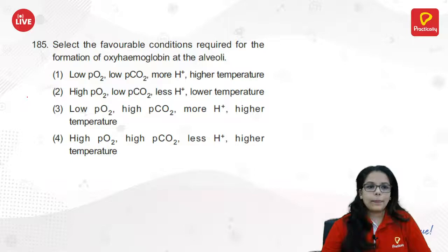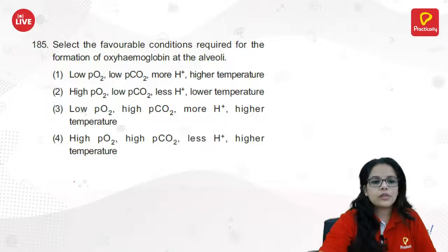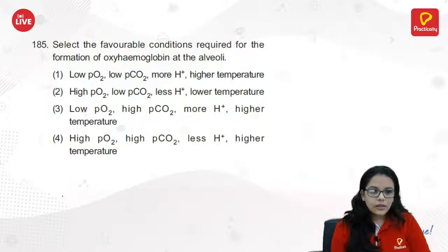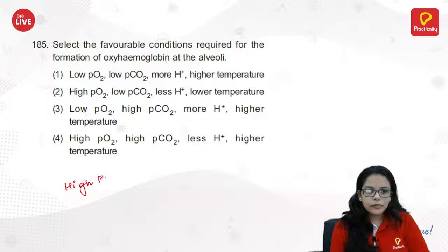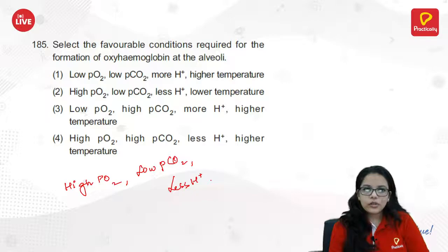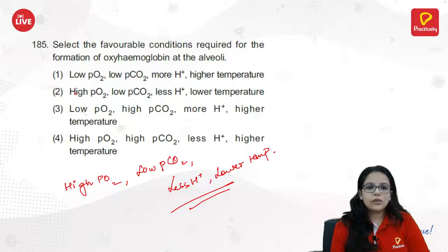Favourable conditions for the formation of oxyhemoglobin at alveoli: high pO₂, low pCO₂, less hydrogen ions, and low temperature. The favourable condition is high pO₂, low pCO₂, less H⁺ ions, and lower temperature.